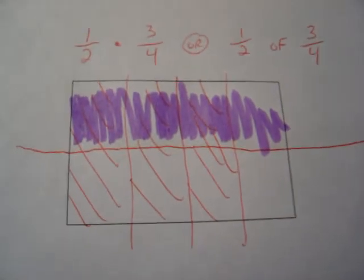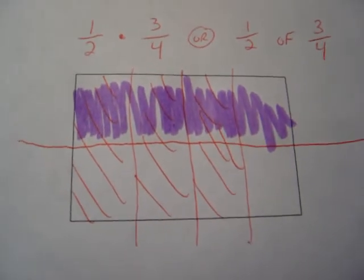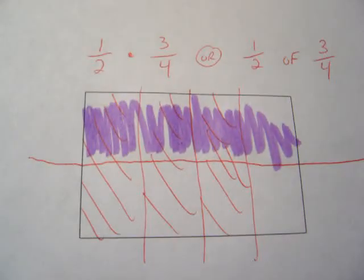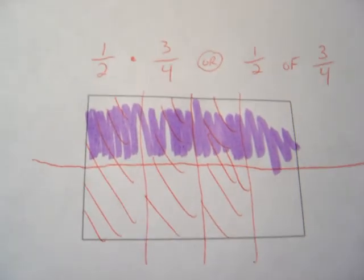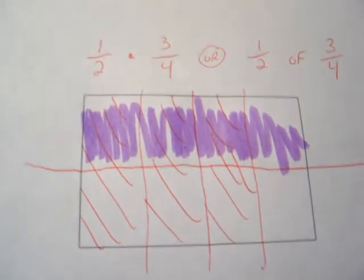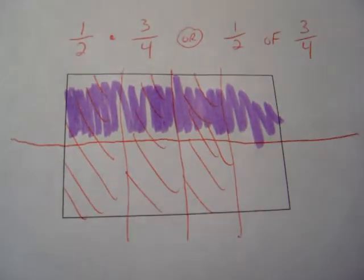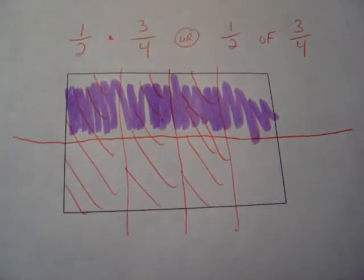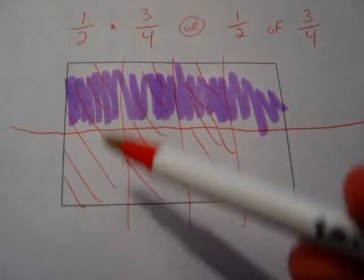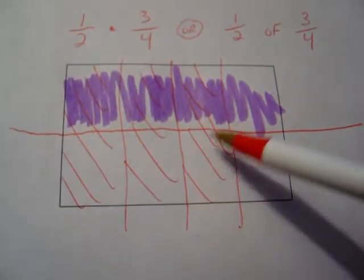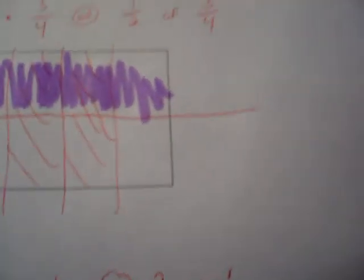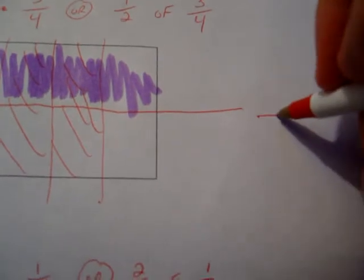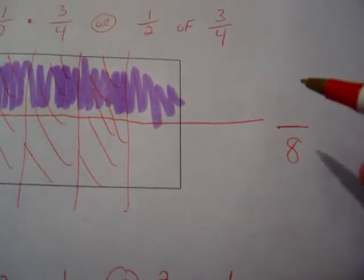Now, the first thing I like to talk about is the denominator of the answer. The denominator is always equal parts of a whole. So now we need to look at how many little pieces has the whole been subdivided into. 1, 2, 3, 4, 5, 6, 7, 8. So our answer is going to be in eighths, or 8 equal parts of a whole.